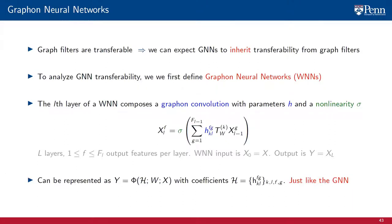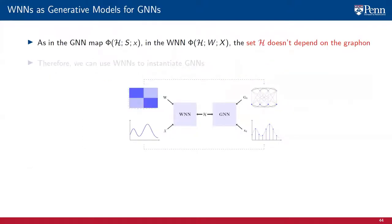Just like a GNN, the graphon neural network can be represented succinctly as a map Phi. This map maps the graphon signal X to the graphon signal Y, and it is parametrized by the graphon W and the set H, which groups the learnable parameters H_{KLF} for all layers and all features of the WNN. Consider a graphon signal x on the graph G with shift operator S, and let Phi be a GNN applied to this graph signal and parametrized by the coefficient set H and the graph shift operator S.